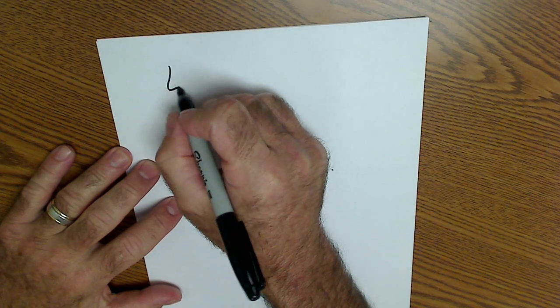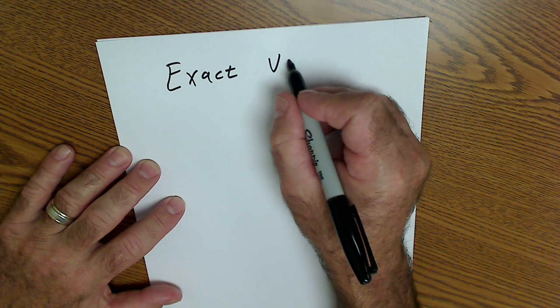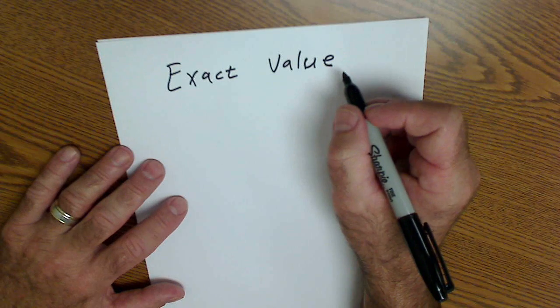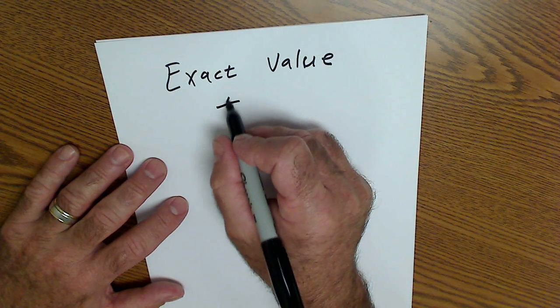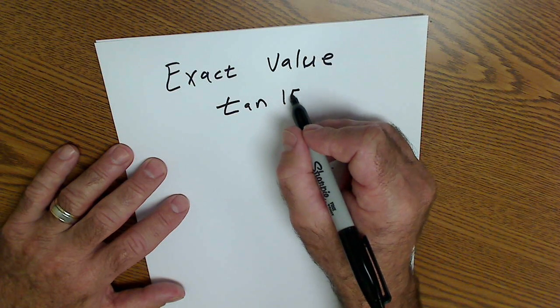I want to do a few exact value problems for trig triangles. I use a five-step process for these exact value problems. Let's say the problem is find the tangent of 150 degrees.